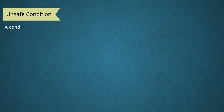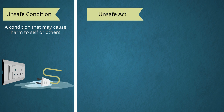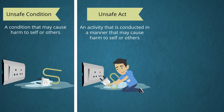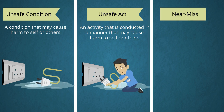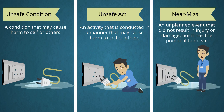Unsafe condition: a condition that may cause harm to self or others — for example, an electric wire lying on water. Unsafe act: an activity conducted in a manner that may cause harm to self or others — for example, a person plugging a wet wire into an electric socket. Near-miss incident: an unplanned event that did not result in injury or damage, but has the potential to do so — for example, a person getting shocked when plugging the wet wire into the socket.